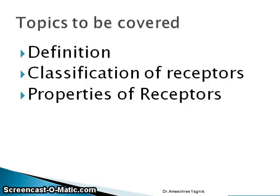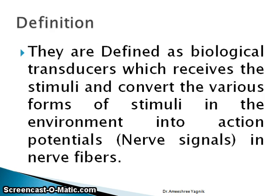Topics to be covered in this lecture: definition, classification of receptors, and properties of receptors. Definition: receptors are defined as biological transducers which receive the stimuli and convert various forms of stimuli in the environment into action potentials — that is, nerve signals in nerve fibers. Transducers are devices which convert one form of energy into another form of energy.